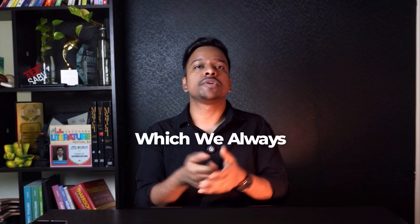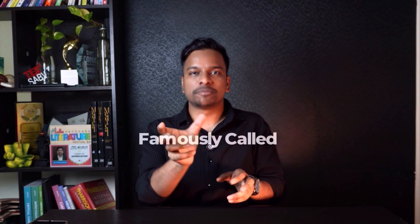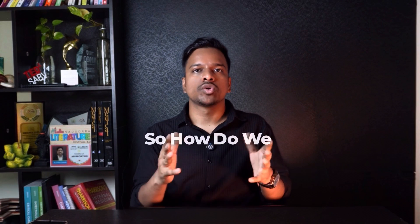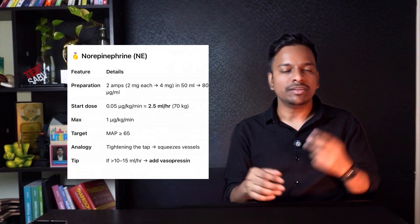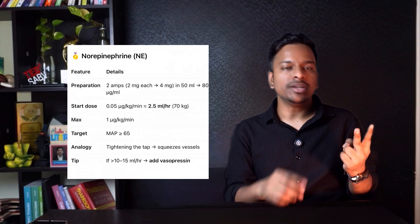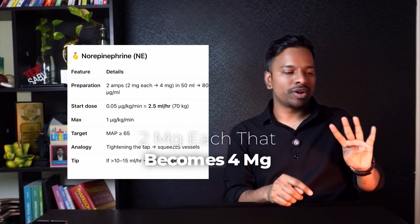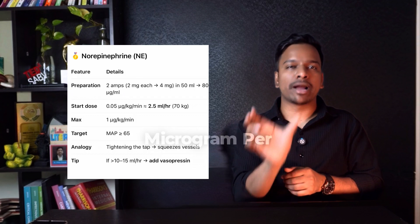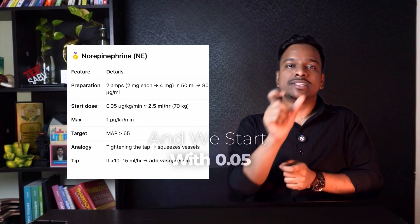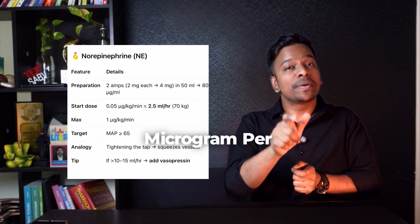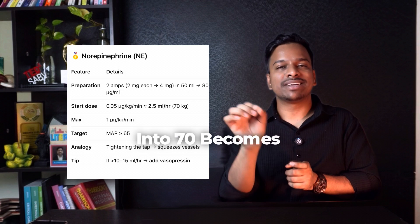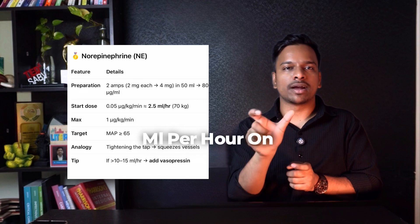The first and most important drug which we always start is norepinephrine, famously called as norad or noradrenaline. This is the first line in septic shock. How do we prepare this? We prepare it in normal saline — we take two ampoules of noradrenaline, 2 mg each, that becomes 4 mg. We put that in a 50 ml syringe, that becomes close to 80 micrograms per ml, and we start with 0.05 micrograms per kg per minute.